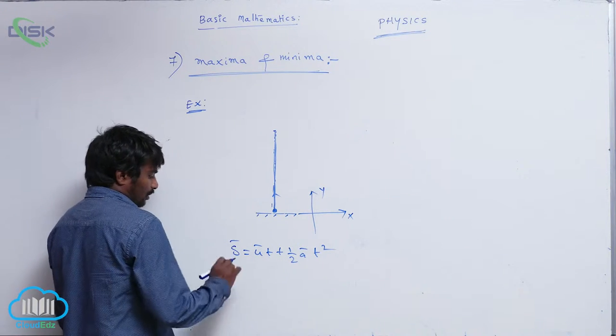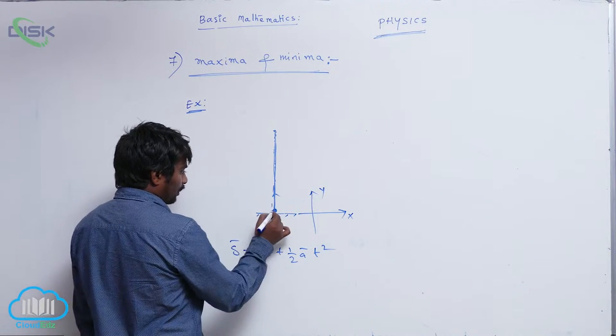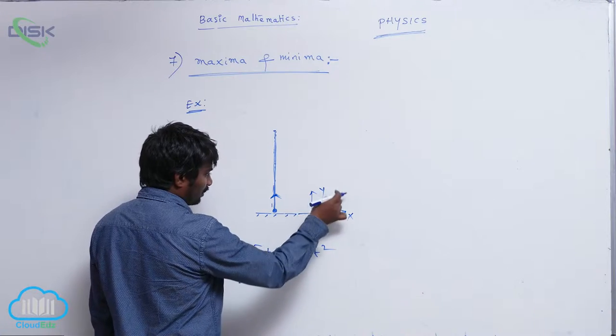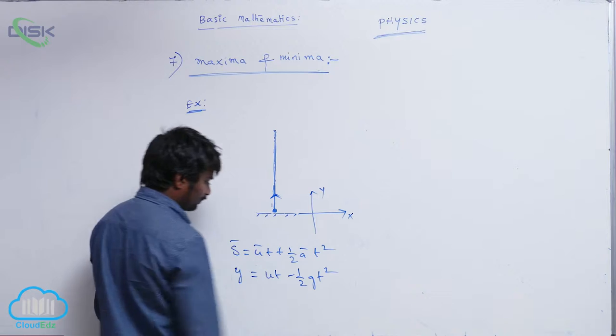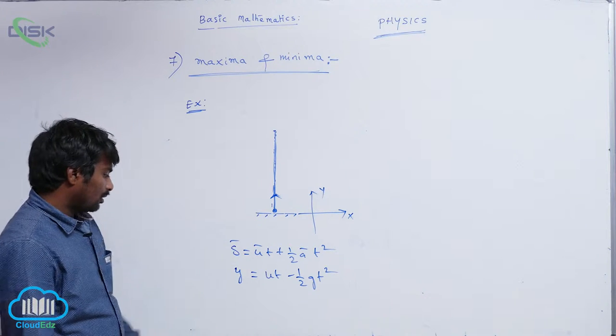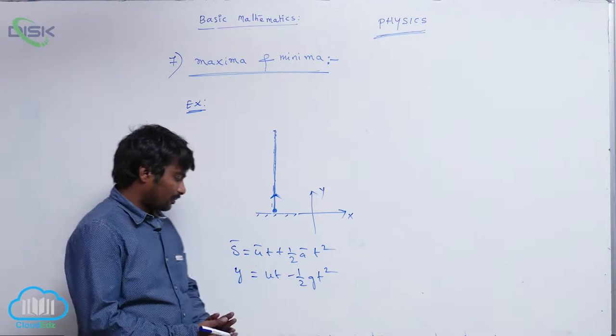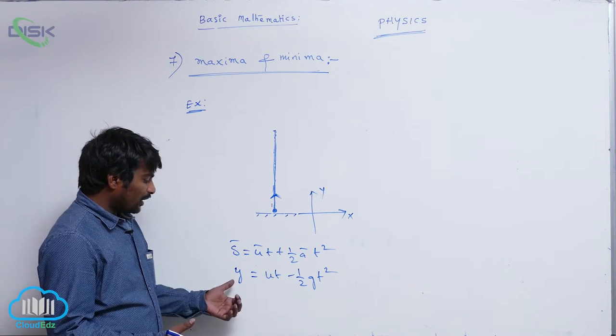square. So y is along positive, initial velocity also along positive y-axis, but acceleration due to gravity always acts downward. So y equals ut minus half gt square.